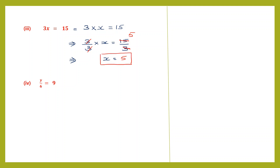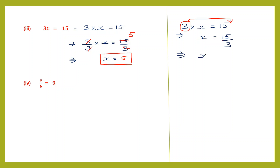Now the transposition method: 3x = 15, meaning 3 × x = 15. To find x, we transpose 3 — which is multiplication on the left — to the right-hand side, where it becomes division: x = 15 ÷ 3. Three fives are 15, so x = 5. Both methods give the same answer.